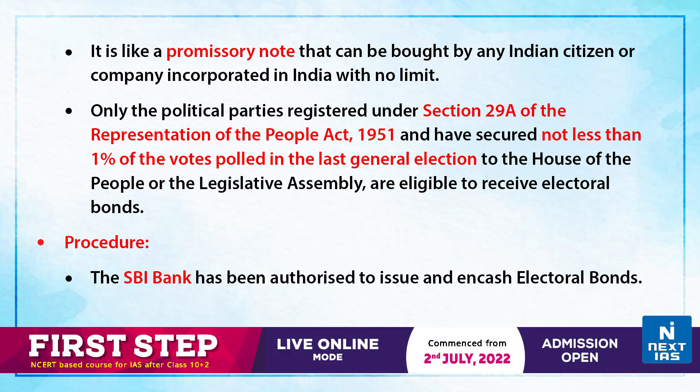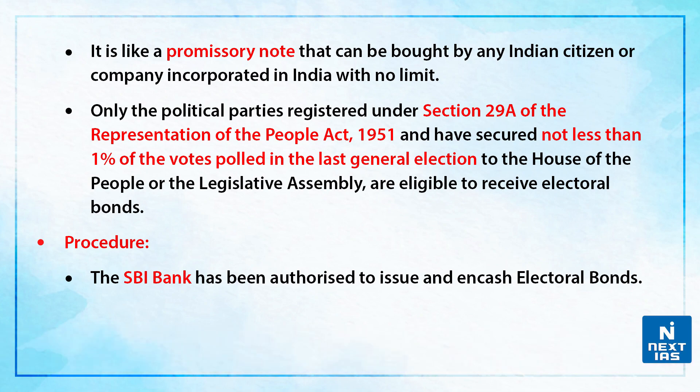Only the political parties registered under Section 29A of the Representation of People's Act 1951 and have secured not less than 1% of the votes polled in the last general election to the House of People or the Legislative Assembly are eligible to receive the electoral bonds.